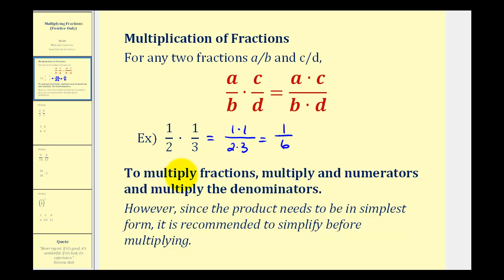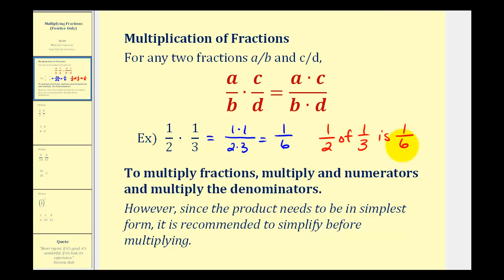However, we do want our product to be in simplest form, so often it's helpful to simplify before we multiply, which we'll look at in just a minute. But to better understand what's happening when we multiply fractions, we can replace the multiplication with the word "of." One-half times one-third really means we want one-half of one-third, which is one-sixth. Again, one-half of one-third would be equal to one-sixth.